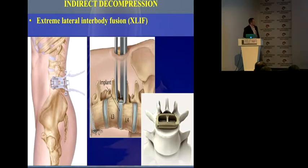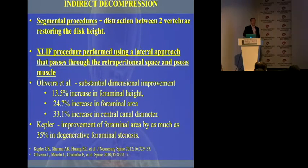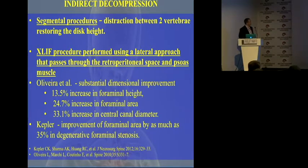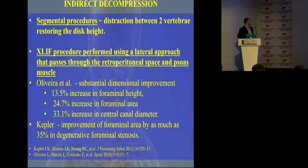This is how we do the extreme lateral interbody fusion (XLIF). We go laterally, put a big cage, and like that we enlarge the dimensions and create more space in the foramen. There is now a lot of research showing that with the XLIF procedure, we generate a lot of space. Oliveira, for example, reported a 13.5% increase of foraminal height, a 24.7% increase of foraminal area, and over 30% increase of the central canal. Kepler reports even more opening of the foramen — over 30% as well.